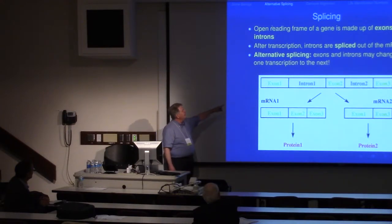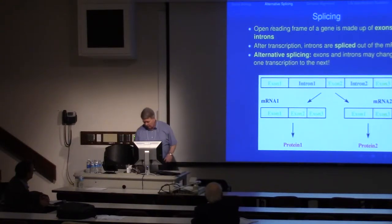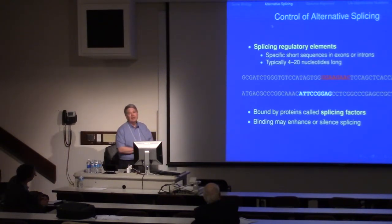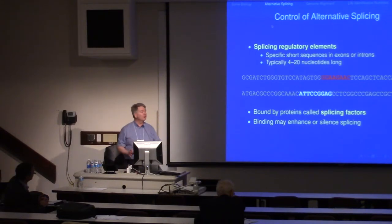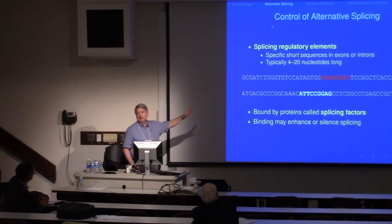Here's an example of an open reading frame with three exons and two introns. One way of splicing it might give you exons one, two, and three, and therefore one protein product. Another way of splicing it might leave out exon two and ultimately give you a different protein product. What we're interested in is how this is controlled. We're looking at what are called splicing regulatory elements — short sequences inside either the exons or the introns that control whether splicing occurs or not and under what circumstances. Here are a couple of examples of some exons where we've highlighted splicing regulatory elements identified in our work.